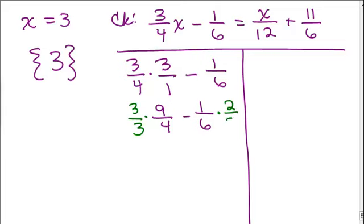And over here, I'm going to multiply by 2 over 2. So this gives me 27 twelfths minus 2 twelfths. So when you plug in 3 on the left side of the equation, you get 25 twelfths. It's reduced. It's an improper fraction. That's perfectly fine.